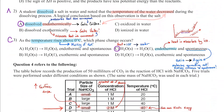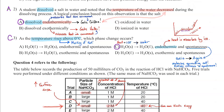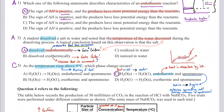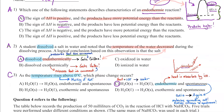Number two: a student dissolved salt in water and noted that the temperature of the water decreased. If the temperature is going down — if it's getting colder — we should know it's endothermic. Endothermic reactions absorb heat from the environment, so the environment temperature gets cold. We always measure the temperature of the surroundings. Whether it's physical or chemical, if something is endothermic, they're taking energy from the surroundings and doing something with it. So the salt dissolves endothermically — like cold packs.